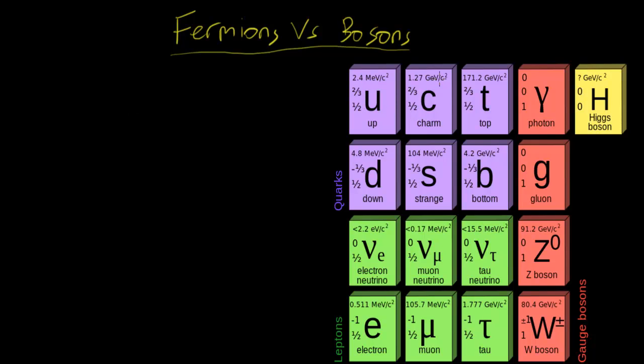So for example, in this chart right here, spin is this one right here. Spin is the third number. And the second number is the charge. So remember what spin is?